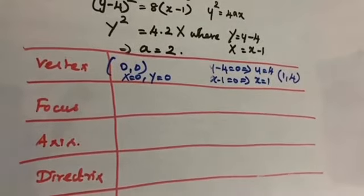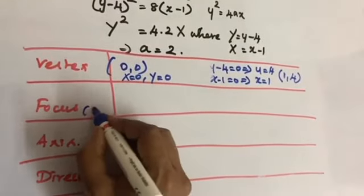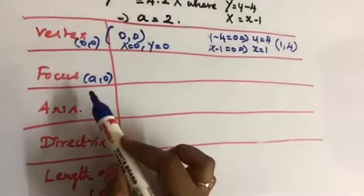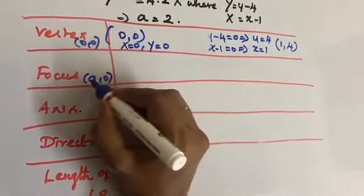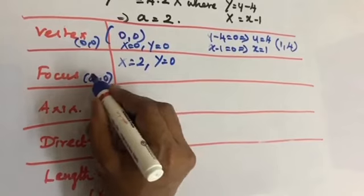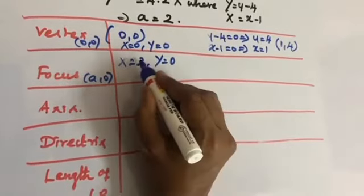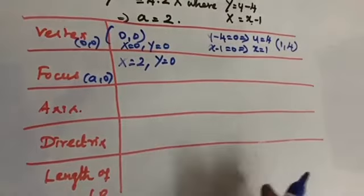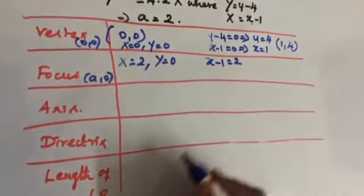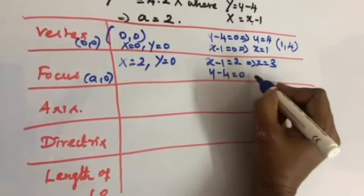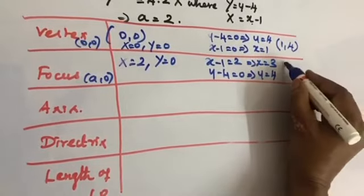Focus: in standard form focus is at (a, 0), so X = a = 2 and Y = 0. Converting back: x − 1 = 2 gives x = 3, and y − 4 = 0 gives y = 4. So the focus is (3, 4). Axis: Y = 0, so y − 4 = 0, meaning y = 4 is the axis of symmetry.